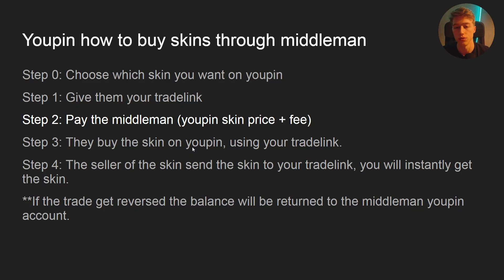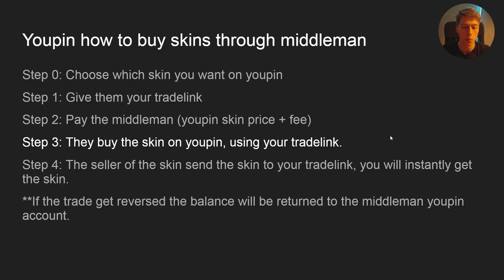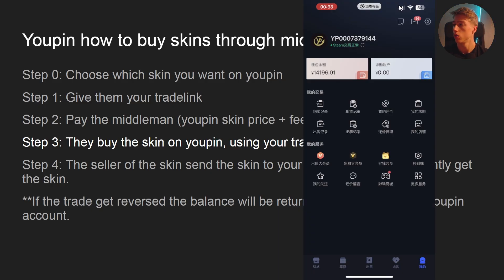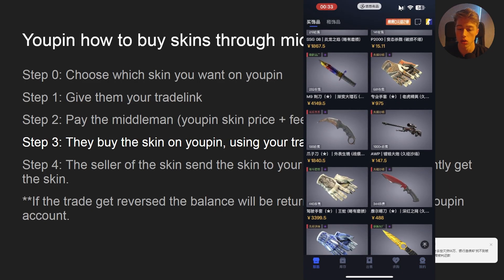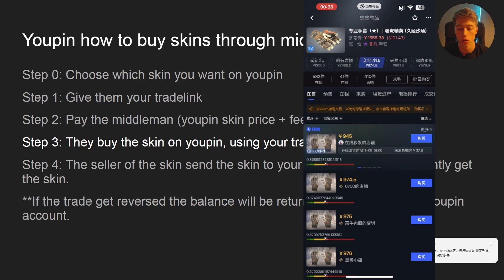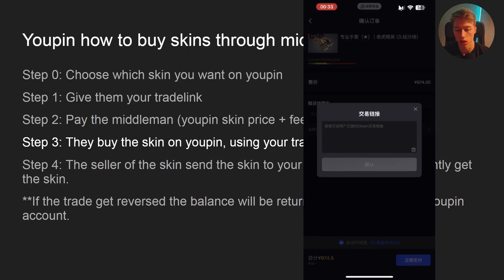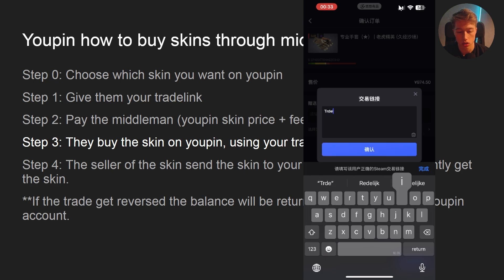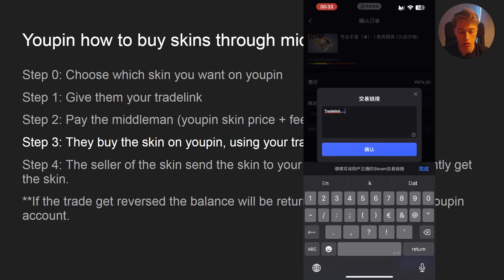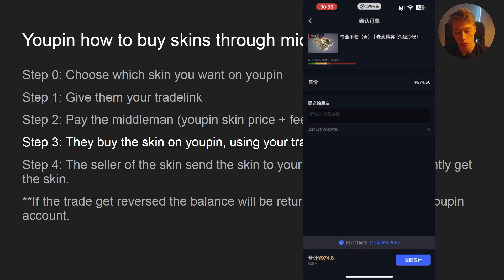Step two: pay the middleman the UPin skin price plus a fee. Fees are usually one to two percent; sometimes people charge five to ten percent, but try to pay under five percent — two to three percent is fine. Then the middleman buys the skin on UPin. In the UPin app, they go to the skin, click on the 'Gift' button, put in your trade link, click OK, then buy the skin.